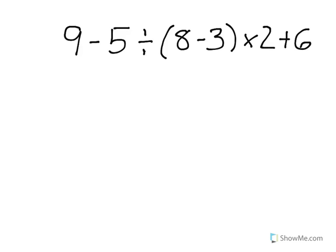Let's do another one. Here we go. We have 9 minus 5 divided by 8 minus 3 in parentheses times 2 plus 6. So, of course, I'm going to put my checklist over here.